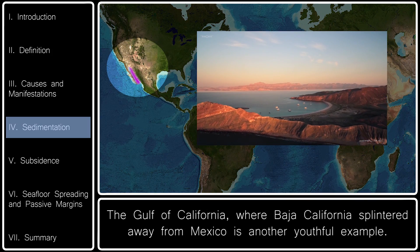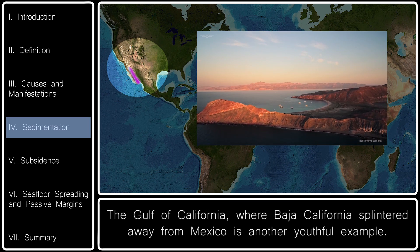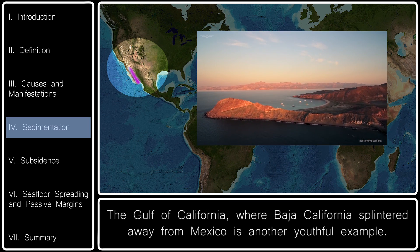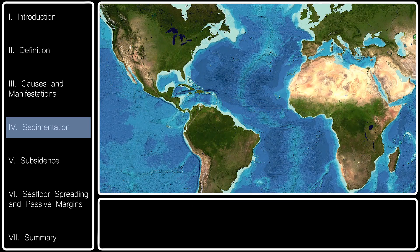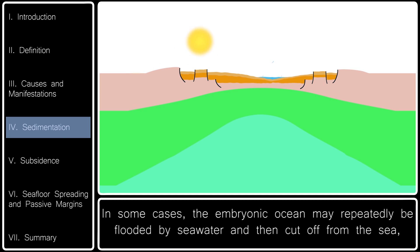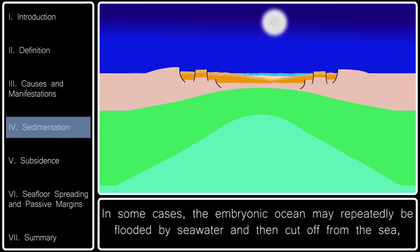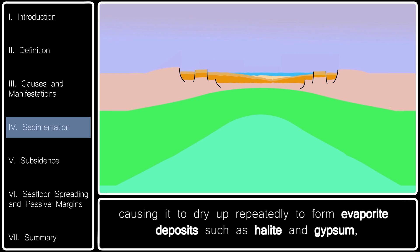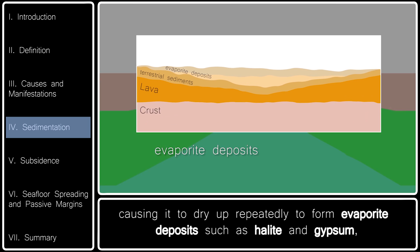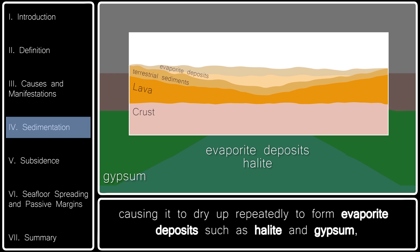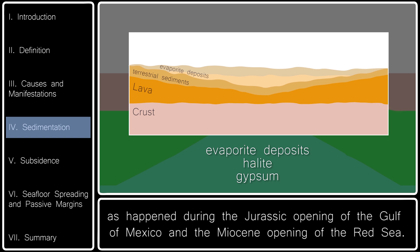The Gulf of California, where Baja California splintered away from Mexico, is another youthful example. In some cases, the embryonic ocean may repeatedly be flooded by seawater and then cut off from the sea, causing it to dry up repeatedly to form evaporite deposits such as halite and gypsum, as happened during the Jurassic opening of the Gulf of Mexico and the Miocene opening of the Red Sea.